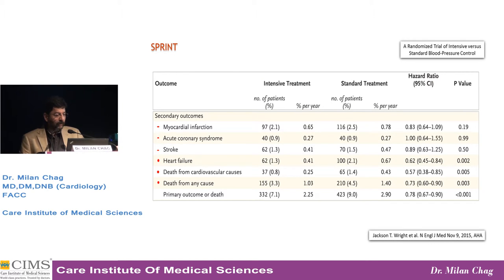As far as individual components are concerned, there was no significant difference in myocardial infarction, ACS syndrome, or stroke — which was slightly surprising. However, heart failure, death from cardiovascular cause, and death from any cause were significantly less with intensive treatment.